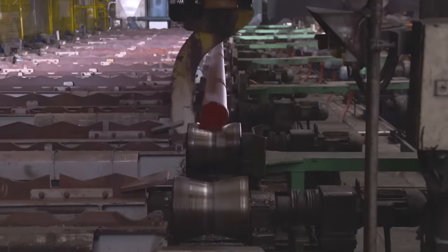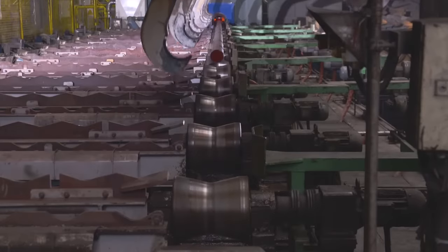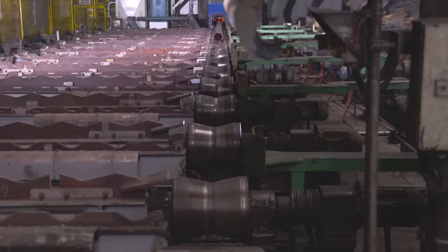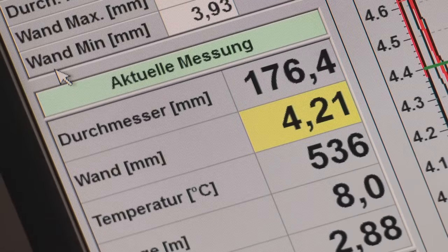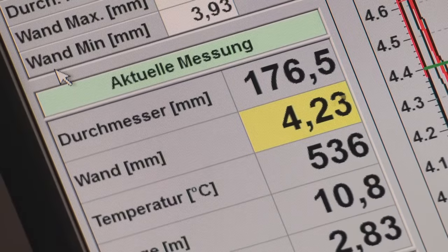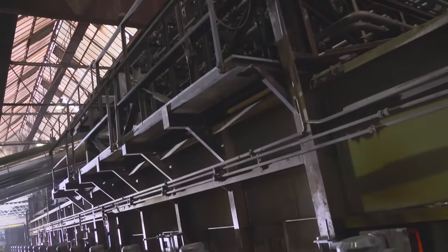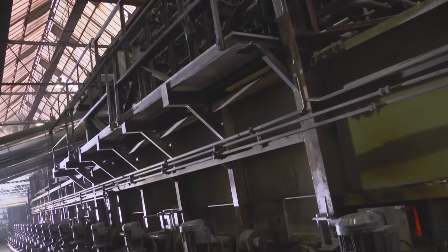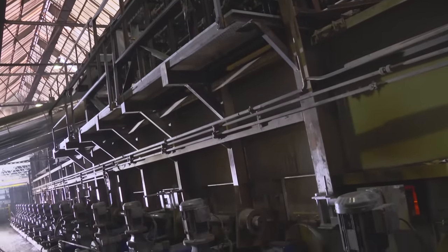Before the hollow enters the reheating furnace its wall thickness is controlled over the entire length with a radiometric gauge. After the radiometric inspection the seamless hollows are heated in a computer controlled walking beam furnace to the required rolling temperature for the subsequent stretch reducing process. The hollows rotate as they pass through the furnace to ensure that they are uniformly heated.